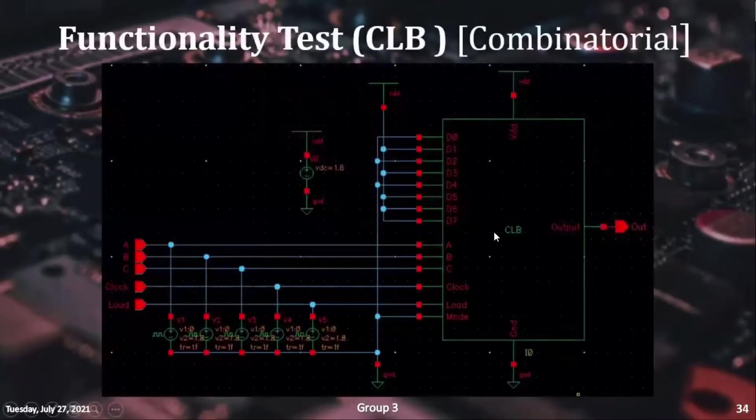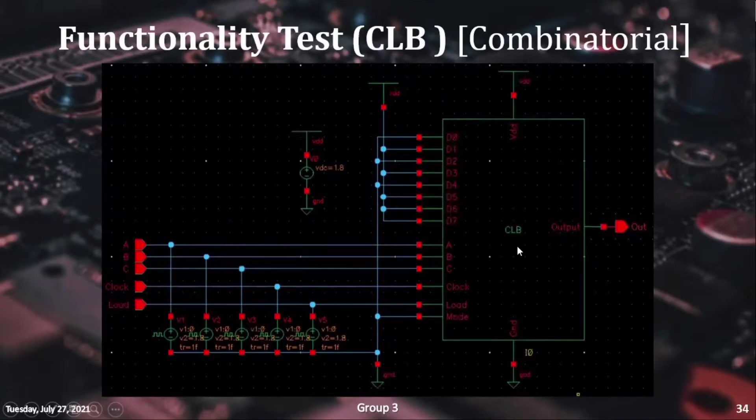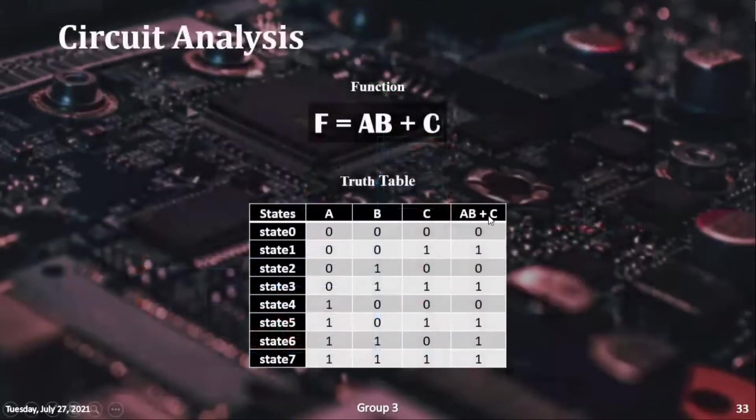After all the components were individually tested, the final CLB design had to be tested too. In the case of the CLB test circuit, the data input pins to the LUT were connected to VDD or ground depending on the requirements of the truth table.